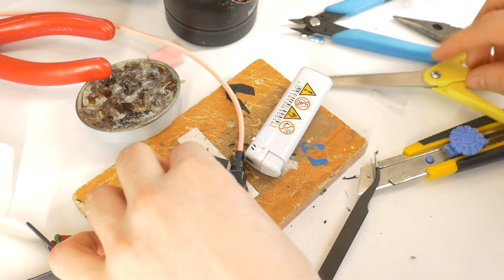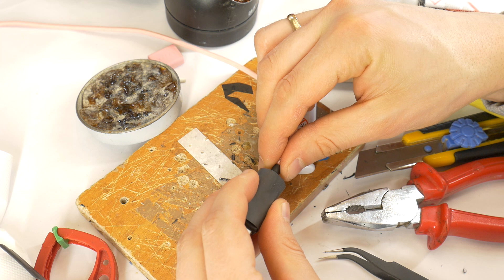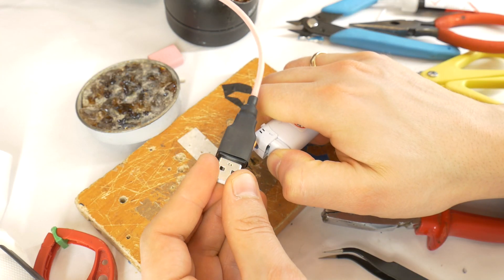Cut off a large piece of heat shrink tubing, stretch it, and install it over the USB connector.